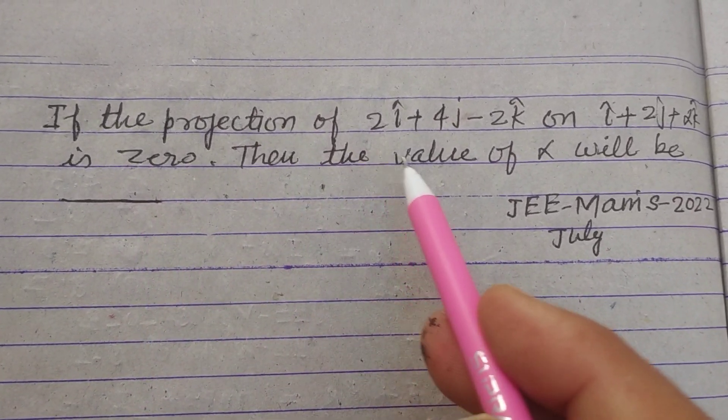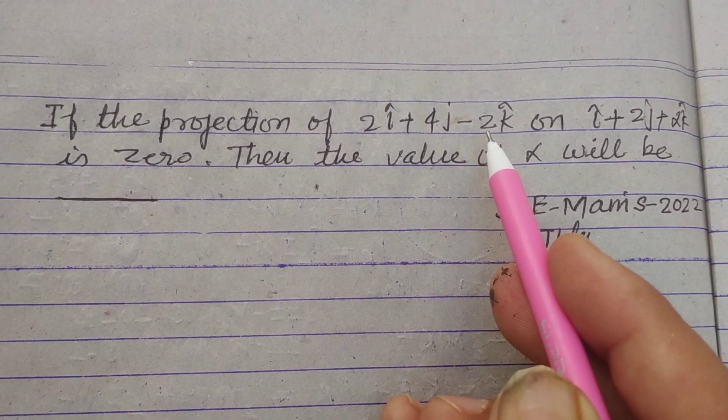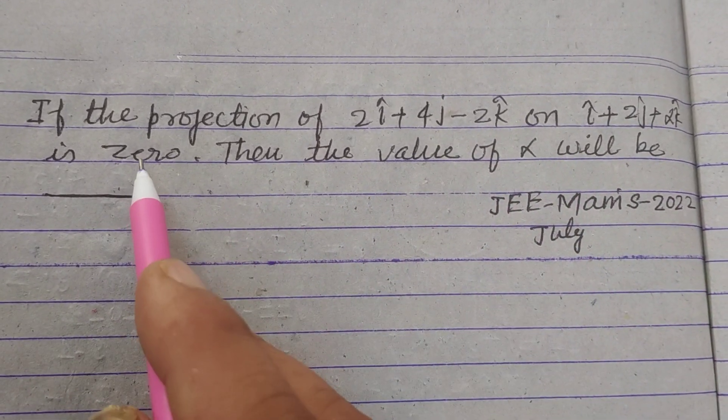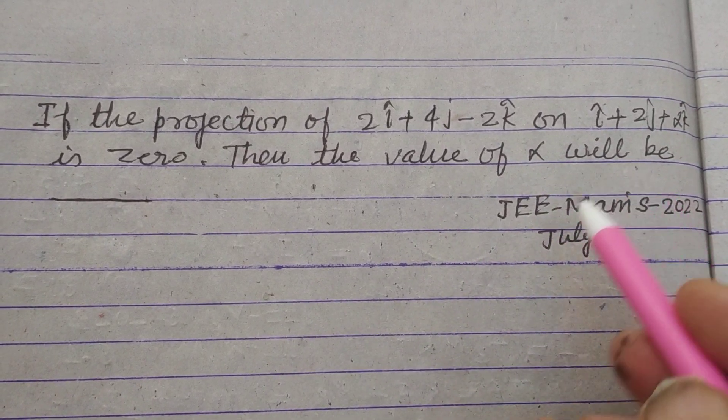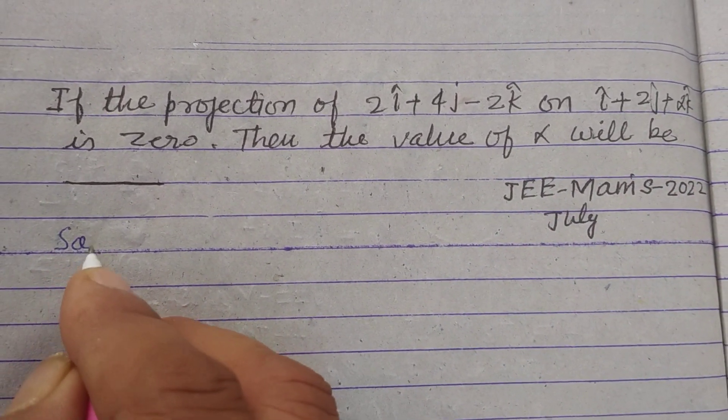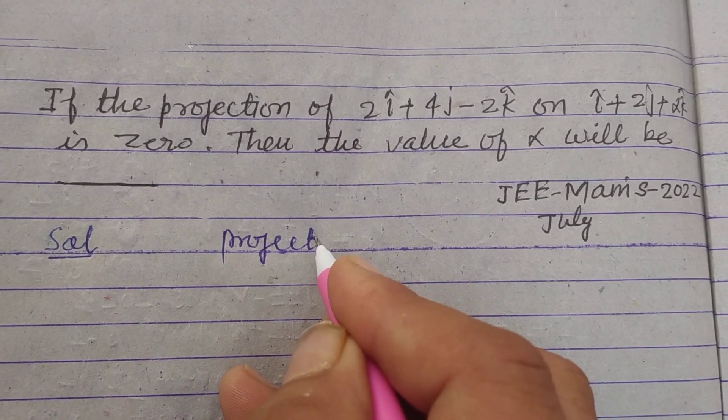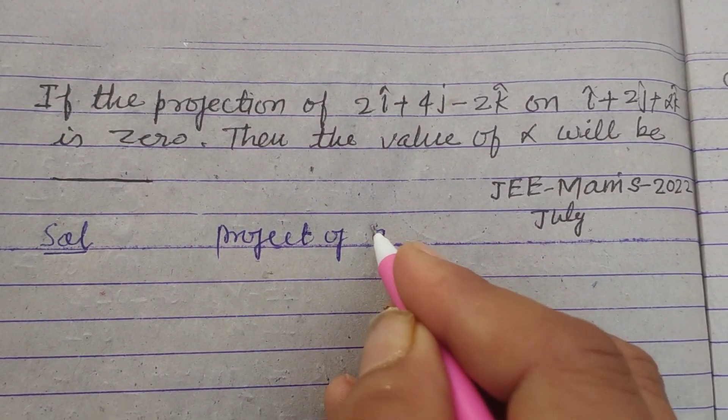If the projection of 2i cap plus 4j cap minus 2k cap on i plus 2j cap plus alpha k cap is zero, then the value of alpha will be.